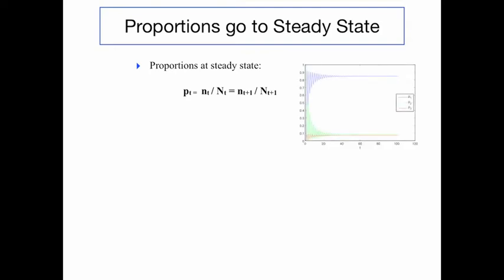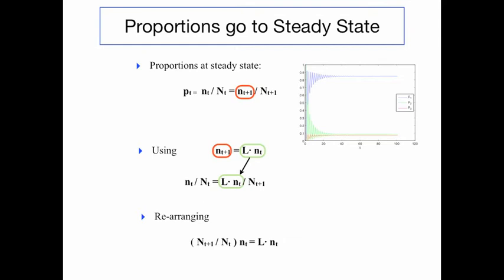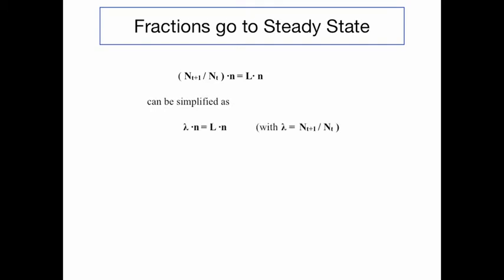You can also visualize that graphically — probably you have done so yourself using MATLAB. Now, if you use the original formulation of the model and substitute this into the steady state condition, we get a new expression. After rearranging this a little bit, we come up with an equation that can be simplified to lambda·n equals the Leslie matrix times n, where lambda is just a number — namely the ratio between the population at time t plus 1 over the population at time t.